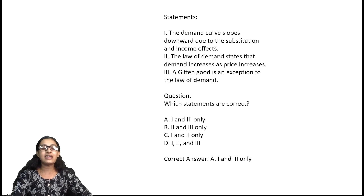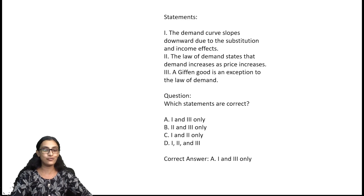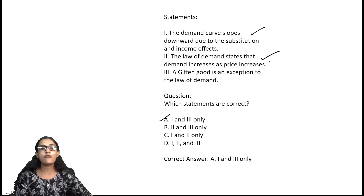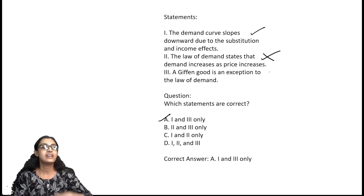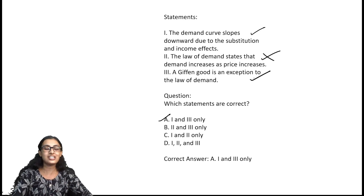Next question: demand curve slopes downward due to substitution and income effect. The law of demand states that demand increases as price increases — no inverse relation. Giffen good is an exception to the law of demand, and that is also a correct statement. The right answer is option A.